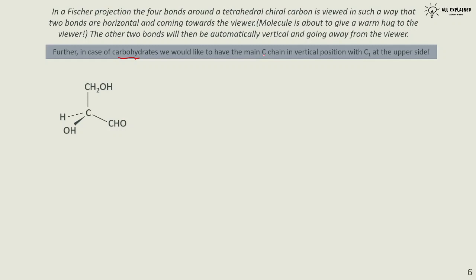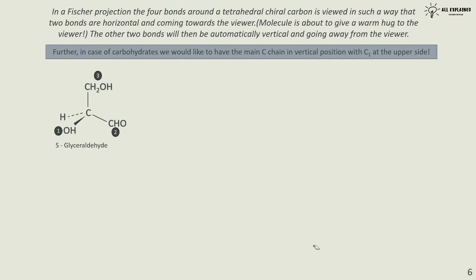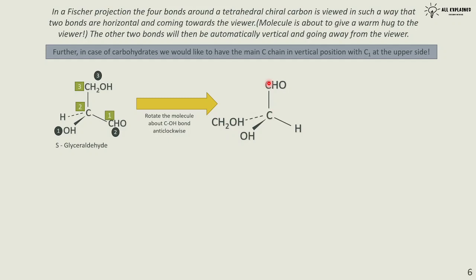In a Fischer projection, the main carbon chain is placed vertically, with C1 at the top — in this case C1 is the aldehyde carbon, the principal functional group. So C1 is at the top, C2 in the middle, C3 at the bottom. For S-glyceraldehyde, rotate the molecule about the C–OH bond anti-clockwise to bring CHO to the top and CH₂OH toward the bottom.